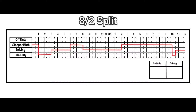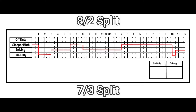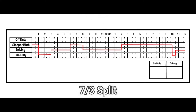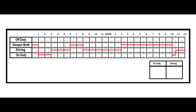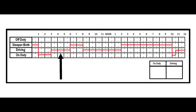The best way to figure out an 8/2 or 7/3 logbook split is that you have two blocks: the block before your two or three hour break, which can be taken either in the sleeper berth or off-duty status, and the block after your two or three hour break. So let's say you come out of the sleeper berth with fully reset clocks and you drop down to on-duty for two hours, then go up to driving for three hours.